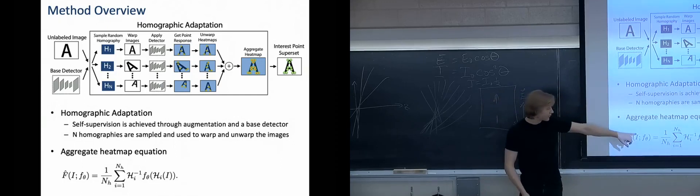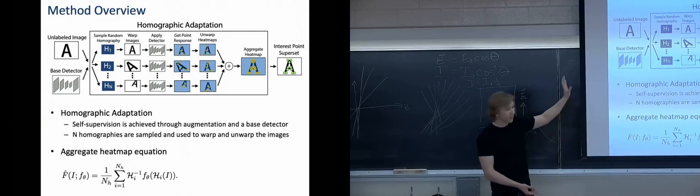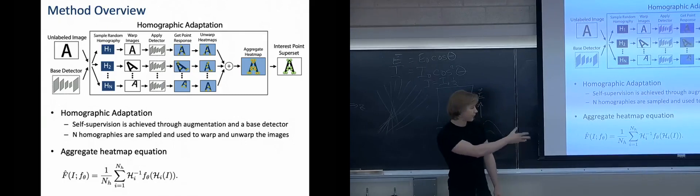So the equation at the bottom of the screen just details what you see at the top. You have your i, which is your image, which is then transformed by the homography h sub i, which then you have your f sub theta, which is the base detector achieving your labels for that, and then lastly inverse homography is applied to that, and then aggregate it all together.